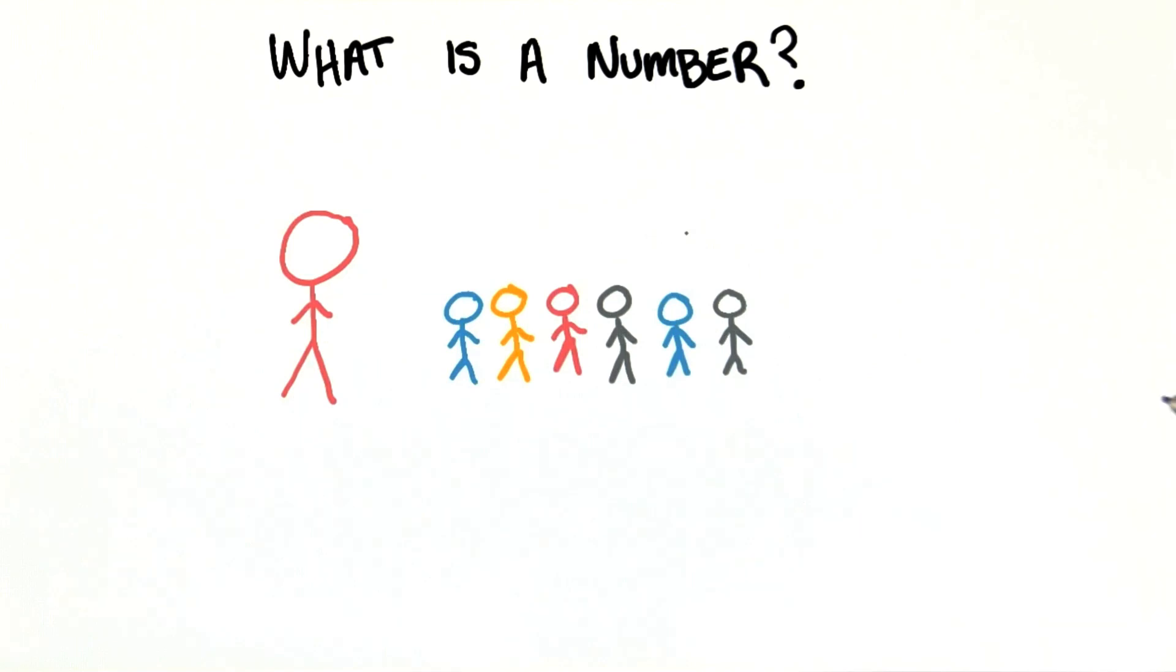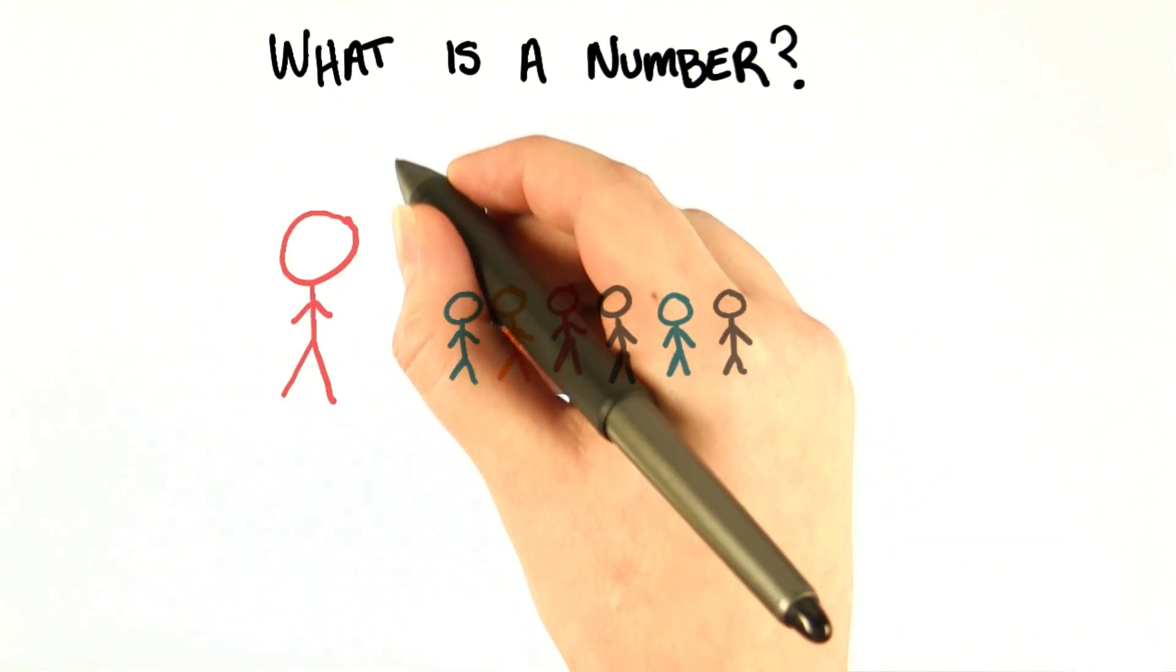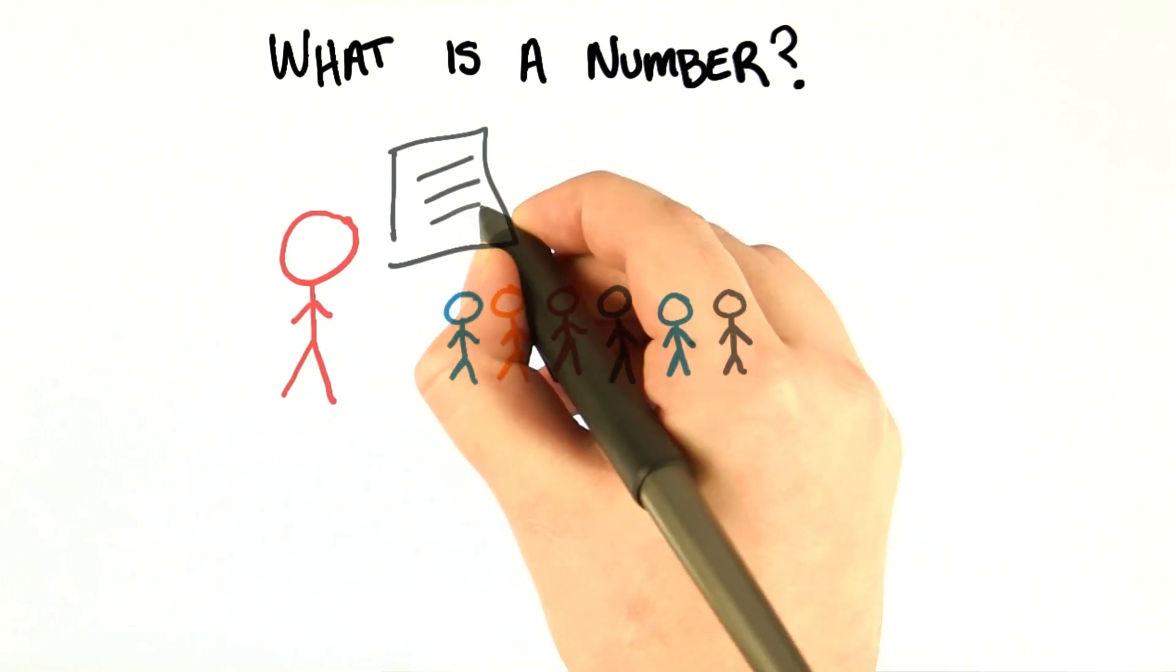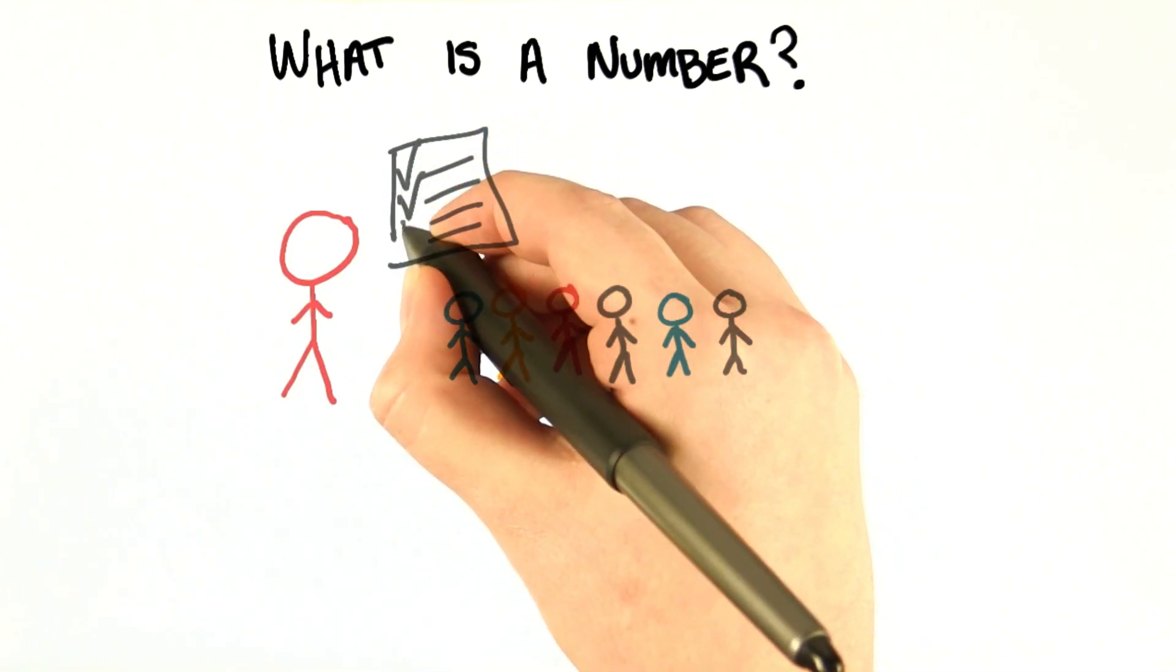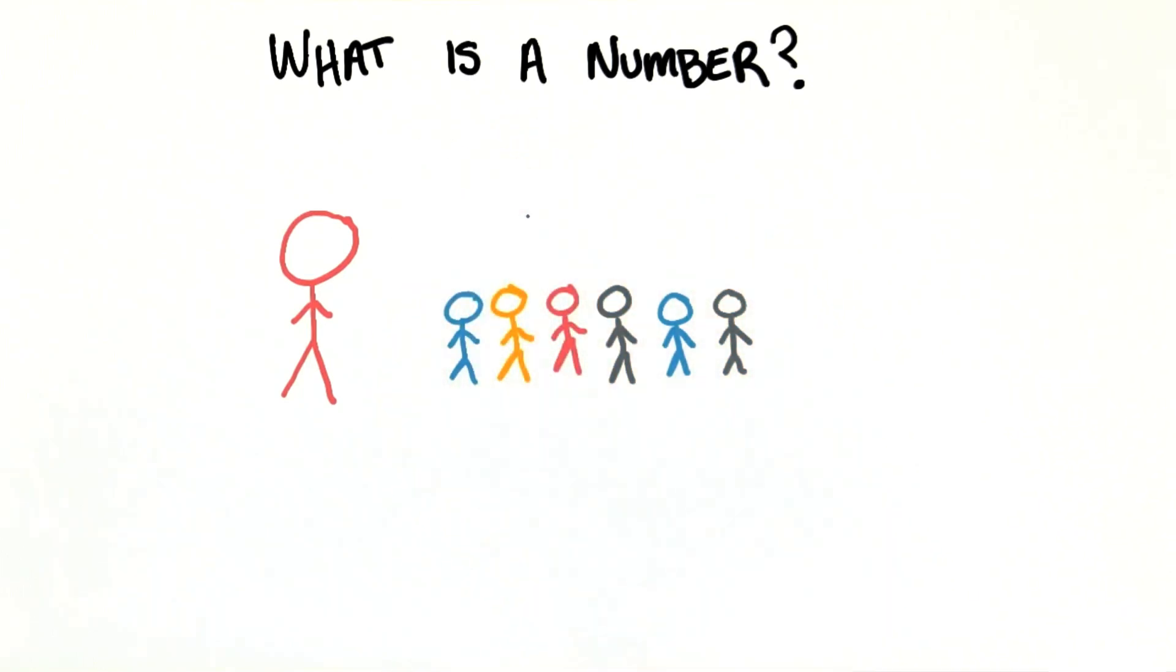One way she could do this would be by constantly looking at a list of their names and double checking that every child on the list is in the group. But this would get really tiring and probably wouldn't be all that effective.